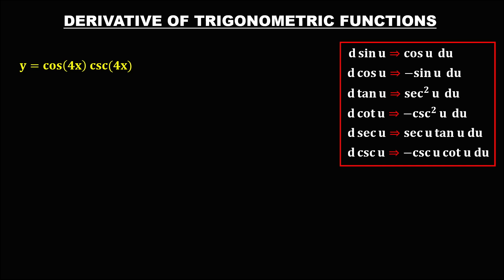For the next given, again using the trigonometric identities. For the product of these two functions — the trig functions are sine, cosine, tangent, cotangent, secant, and cosecant. For the product of two functions, the result is the middle function.